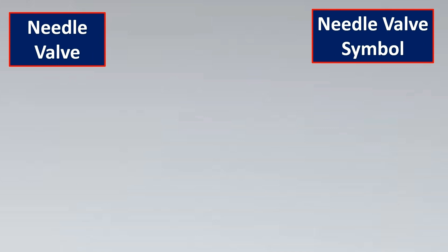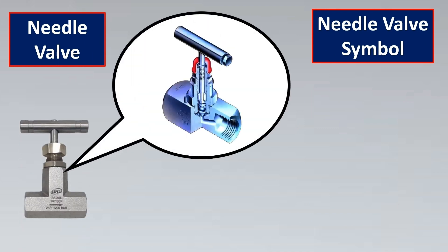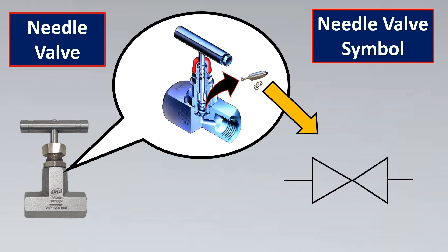Next is the needle valve symbol. For a needle valve, the construction is important: inside the valve there is a small needle which tries to regulate the flow. So we take the generic valve symbol and the needle is represented as a pointed line coming in. This is the needle valve symbol. This symbol is not usually part of ISA 5.1 symbology, but needle valves are important and they are shown in a lot of P&IDs with this particular symbology.